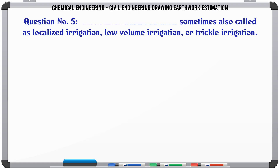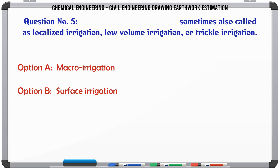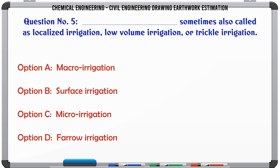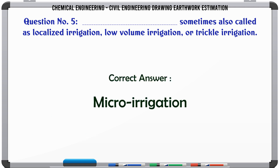Sometimes also called localized irrigation, low-volume irrigation, or trickle irrigation. A. Macro-irrigation. B. Surface Irrigation. C. Micro-Irrigation. D. Faro-Irrigation. The correct answer is: Micro-Irrigation.